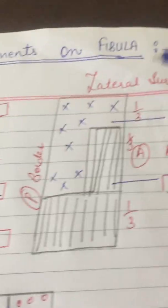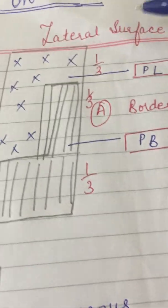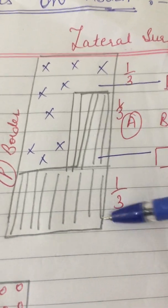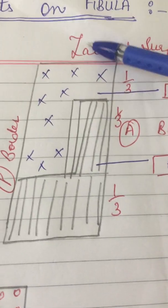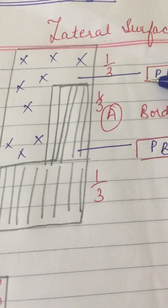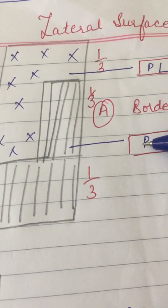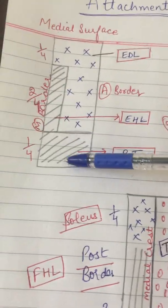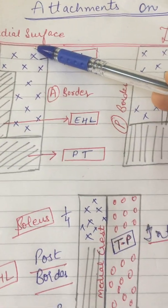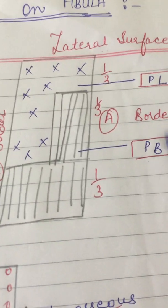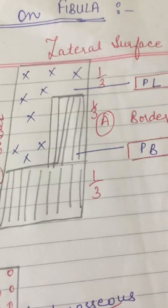Now come to the lateral surface. The lateral surface I have again divided into three parts: one-third, one-third, one-third. From the lateral surface two muscles arise: peroneus longus and peroneus brevis. The third muscle, peroneus tertius, I have already discussed — its origin is from the lower one-fourth of the medial surface. From the lateral surface we have only two muscles: peroneus longus and peroneus brevis.